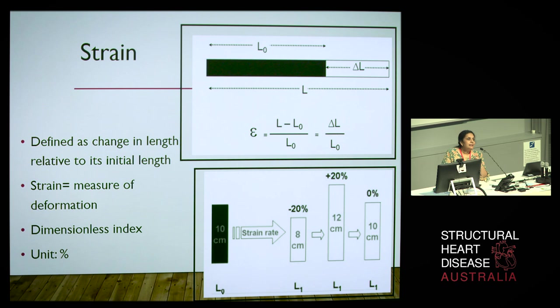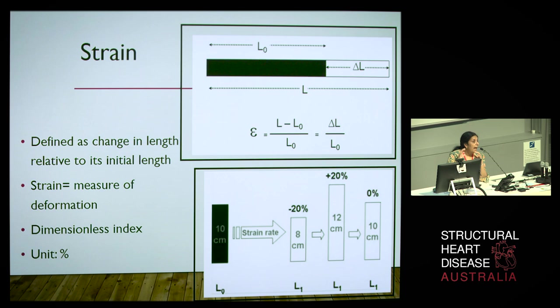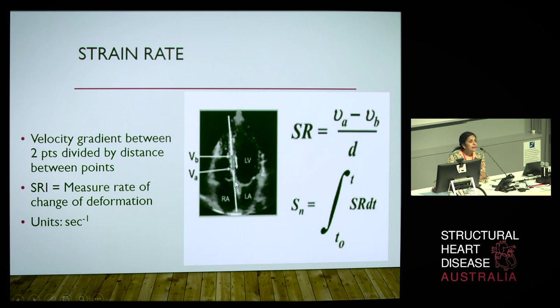Strain is a measure of myocardial deformation. It looks at the change in length compared to original length. For the heart muscles, which are relaxing and contracting, this is quite useful. If you start at 10 centimetres and shorten, you get negative strain — the minus just says the muscle is contracting — and when it relaxes or elongates, we say it's positive strain. Many people now just look at absolute strain. We can also compute strain rate: it's the velocity gradient between two points divided by the distance, or the rate of change in strain, and the unit is per second.